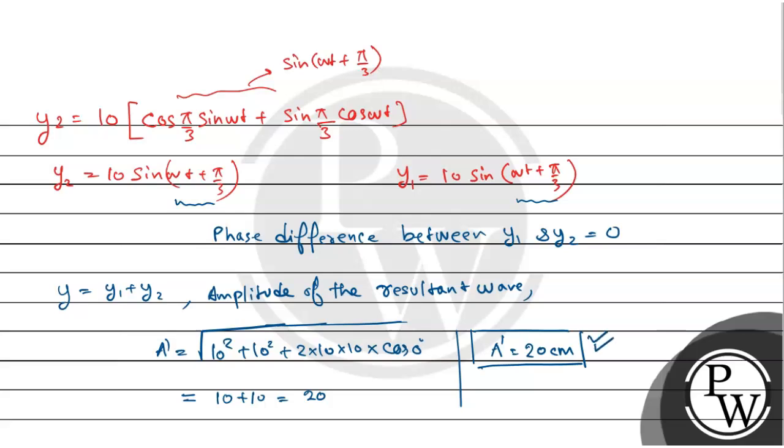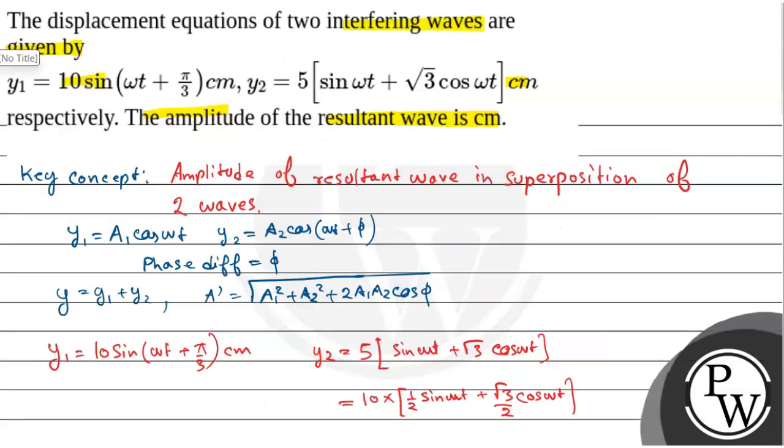This is our final answer. The amplitude of the resultant wave in centimeter is 20. Hope you understand it. Thank you.